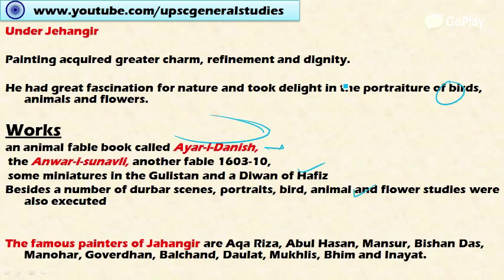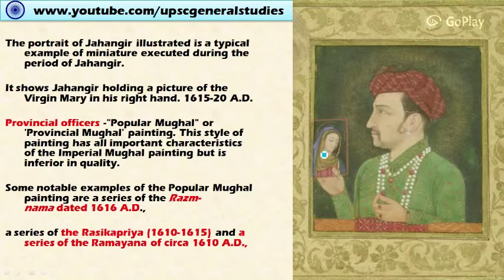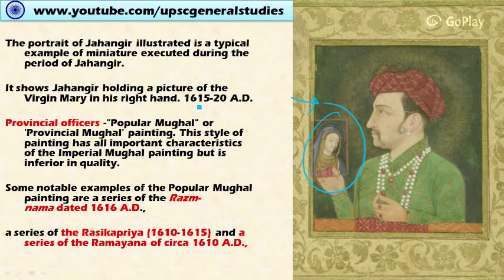Famous painters during Jahangir's time include Agha Riza, Abul Hasan, Mansur, Bishan Das, Manohar, Govardhan, Balchand, and Daulat. An important example of miniature from this period shows Jahangir holding a picture of the Virgin Mary in his right hand, dated 1615 to 1620, and is characterized by a golden border — a typical example of portraiture from the Jahangir period.